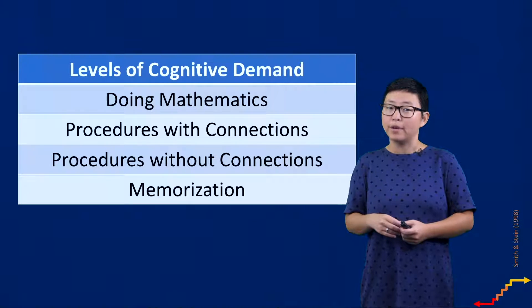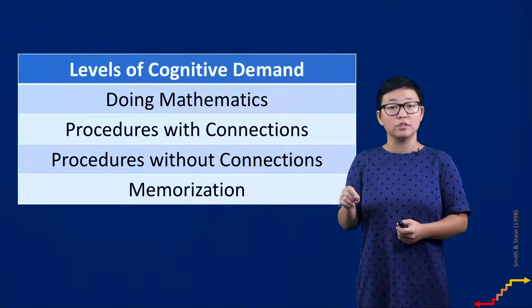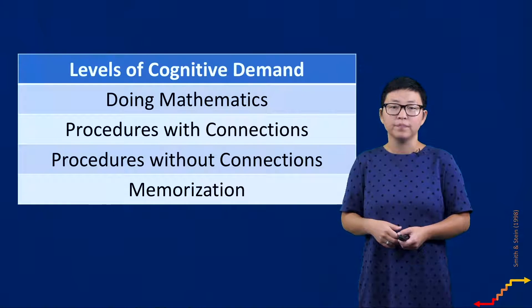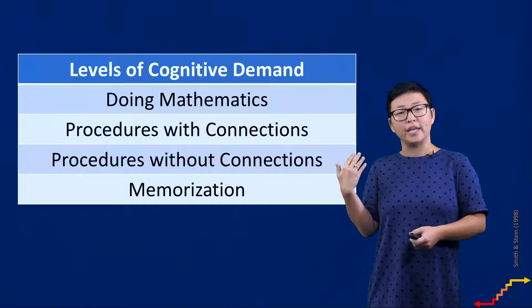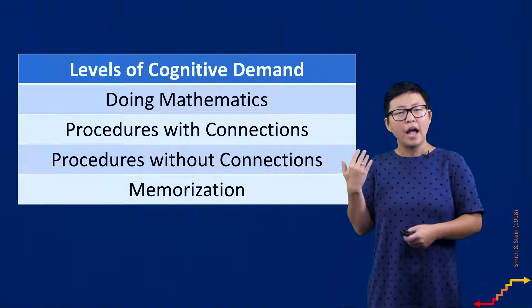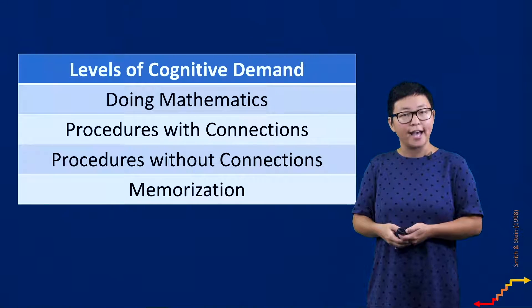Memorization, procedures without connections, procedures with connections, and doing mathematics. These four levels can help you take any mathematical task, evaluate it against these criteria, and then determine what level of cognitive demand your task is at. So let's look at examples at each level.